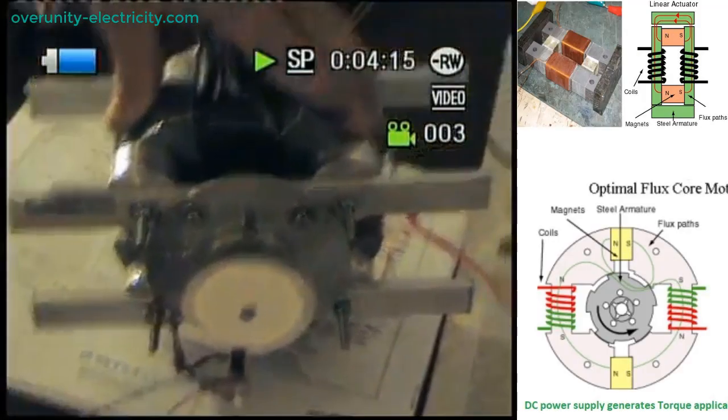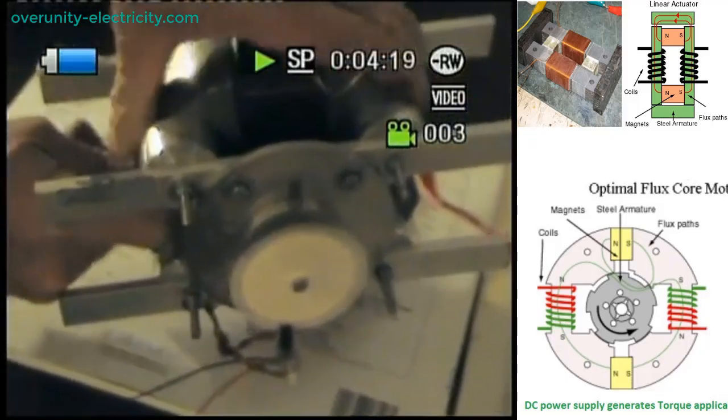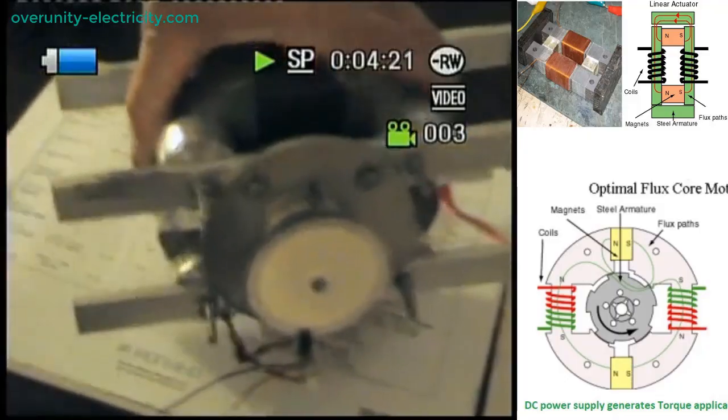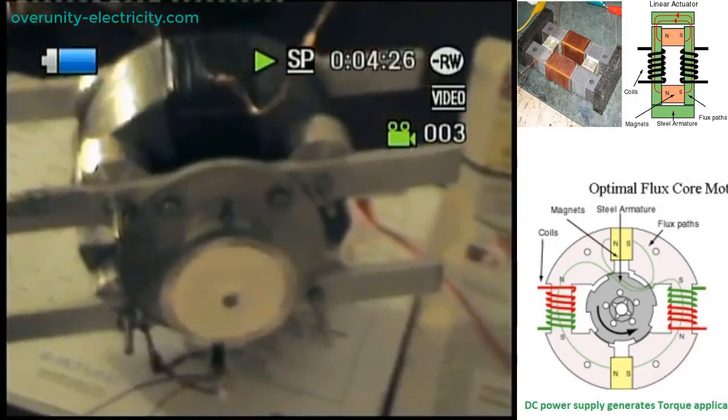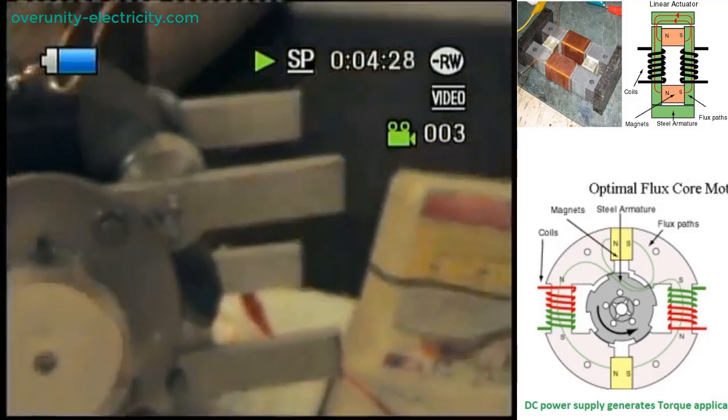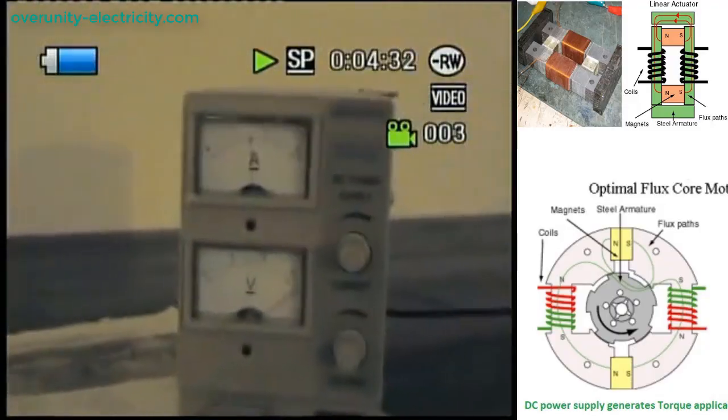The reason this technology never reached mass production lies in the context of the oil and automotive era, where such disruptive energy systems found little commercial support. Even so, it remains possible to develop and retail integrated motor-generator units of this type today, bringing practical value to both inventors and people seeking more efficient energy solutions.